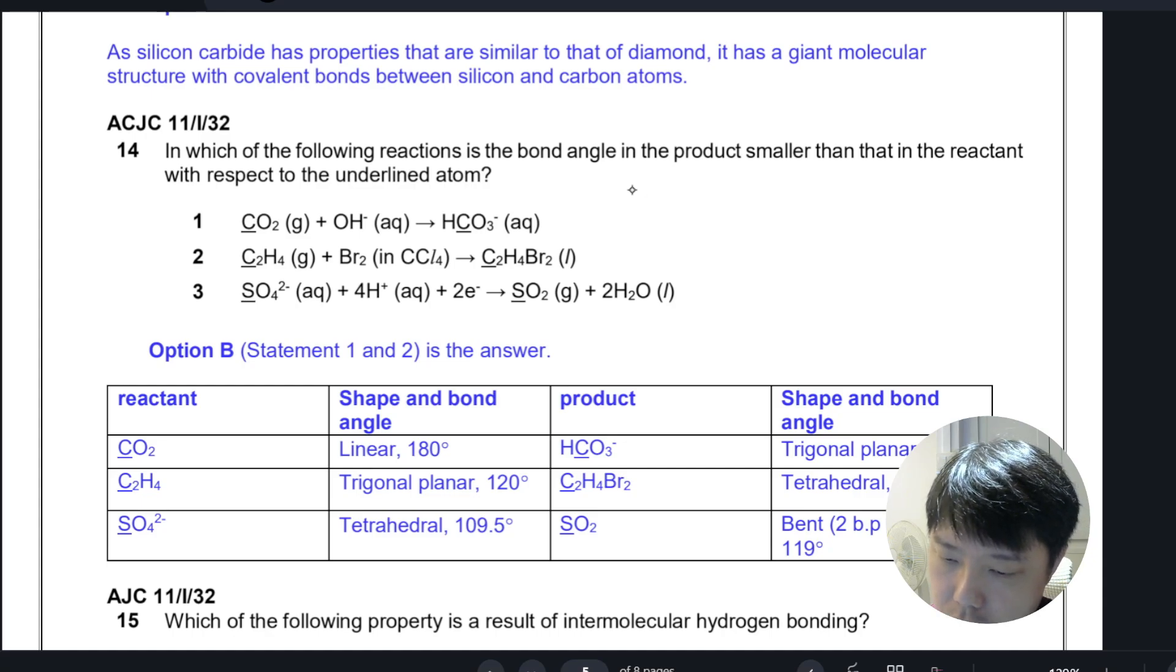Looking at CO2, it's linear so it's 180 degrees. HCO3 minus is trigonal planar at 120 degrees.